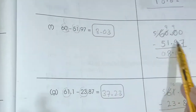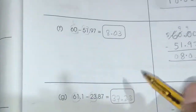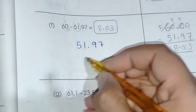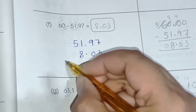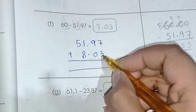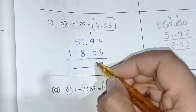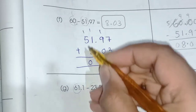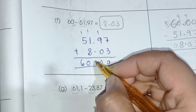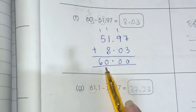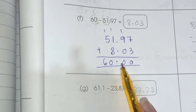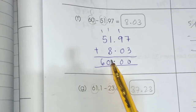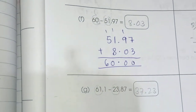Let's have another example. We have 60 minus 51.97, and the answer is 8.03. We are going to take 51.97 and the answer 8.03 and add both numbers. 3 plus 7 is 10, write 0 carry 1; 0 plus 9 plus 1 is 10, write 0 carry 1; 8 plus 1 is 9 plus 1 is 10; 5 plus 1 is 6, and the decimal point goes here. The answer is 60.00 — since the digits after the decimal point are zero, it is simply 60. This is a reasonable answer.